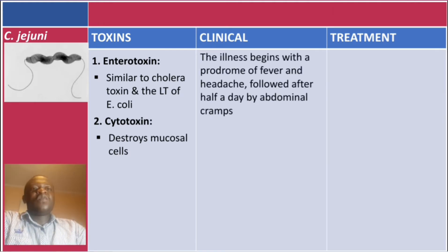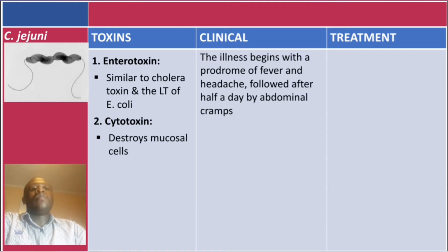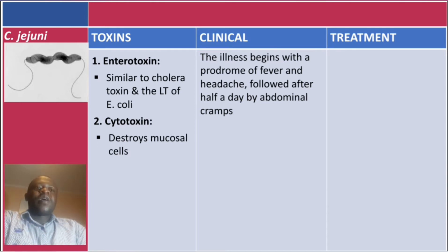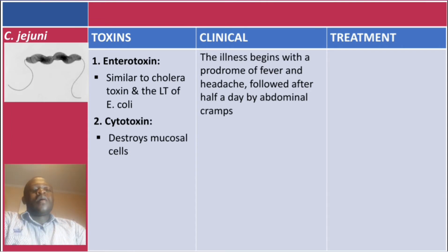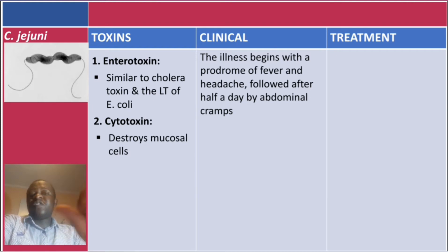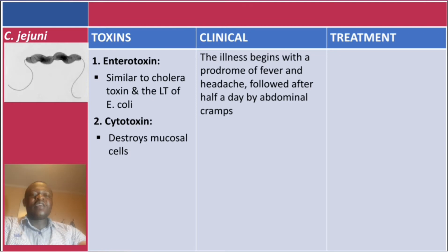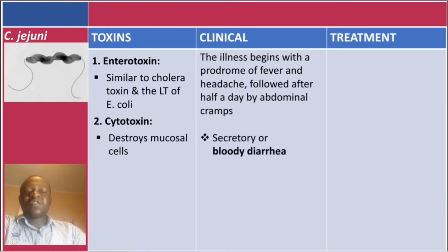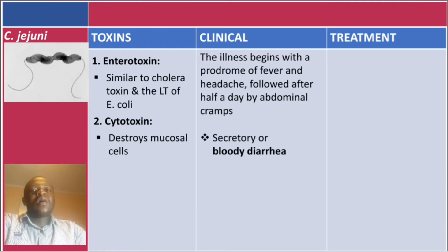The illness begins with a prodromal period of fever and headache, followed after about half a day by abdominal cramps. Since the bacteria is invasive, it causes secretory or bloody diarrhea. This type of diarrhea is very important to note.